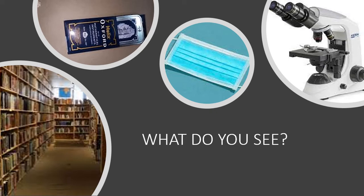I want to believe that you've been able to identify either shelves, books, or a library in the first photo. In the second photo, you should have identified the geometrical set. The third photo: mask. And lastly, in the fourth photo, a microscope. All these four things are examples of nouns.